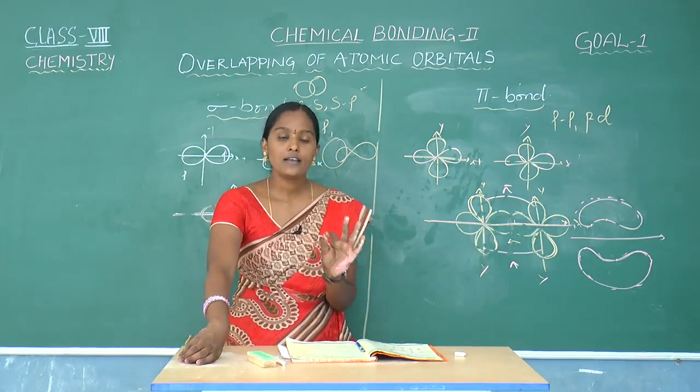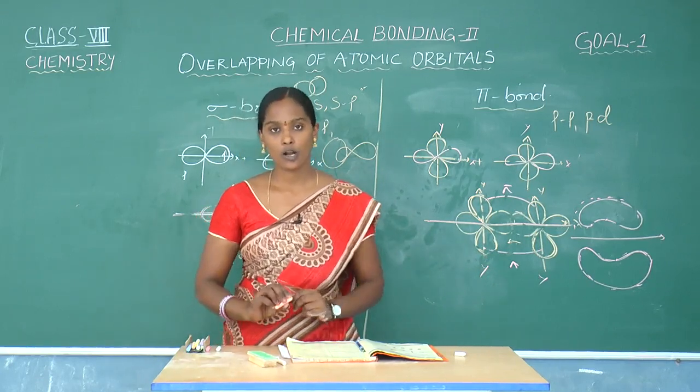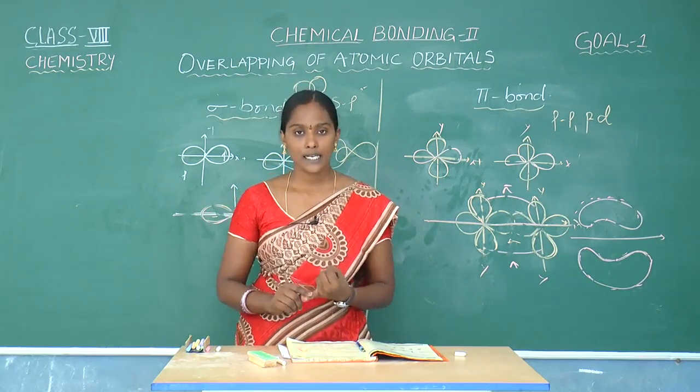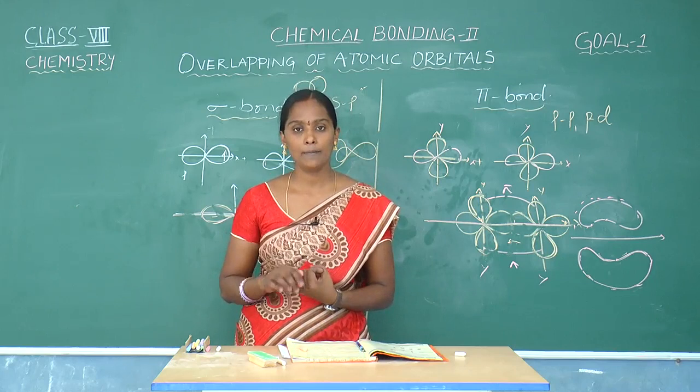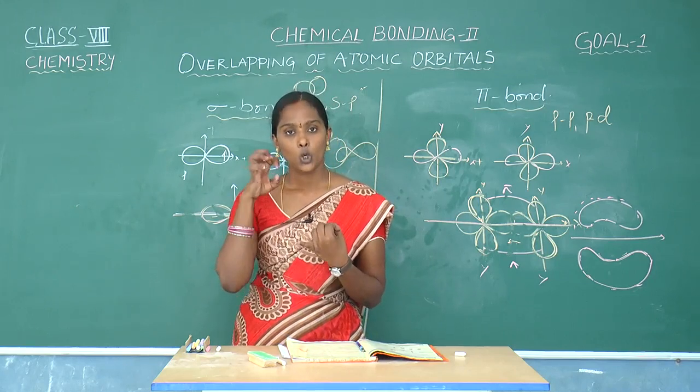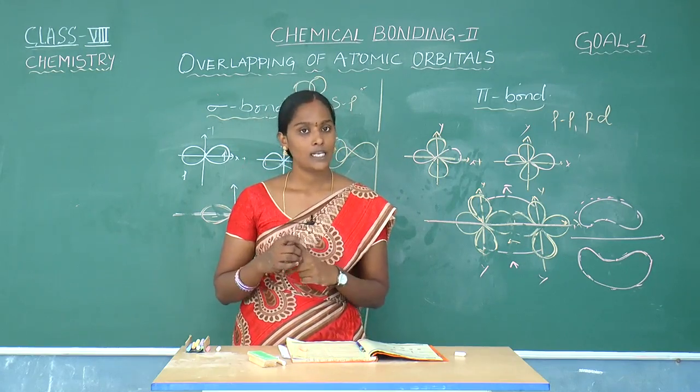Each additional bond formed after one sigma bond is called as pi bond. So we can say that pi bond is dependent and sigma bond is independent. Sigma electrons are called as localized electrons and pi electrons are called as mobile electrons.